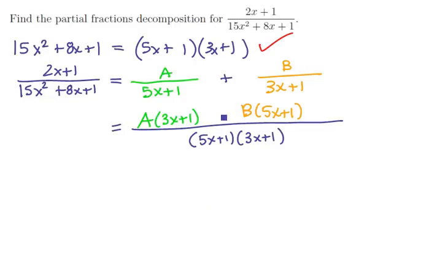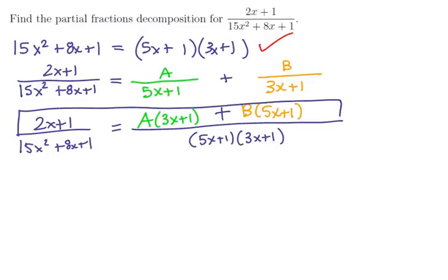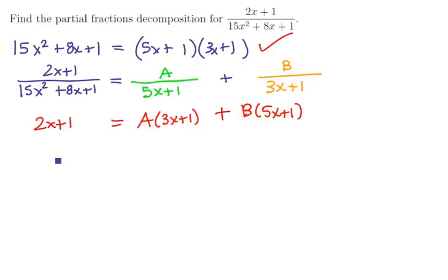Since these terms have the same denominator, we can add their numerators and set it equal to the original. With equal fractions having the same denominator, we only need to set the numerators equal: 2x+1 = A(3x+1) + B(5x+1). Let's focus on this equation.